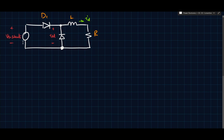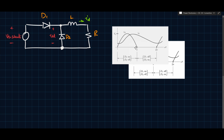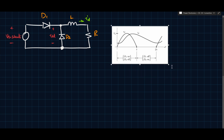But when the voltage goes negative, D1 will eventually turn off. In order to keep the current continuous, D2 will begin to conduct. To make more sense of what this looks like, let's look at some waveforms, because that's always important.